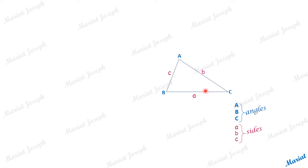So a triangle has six parts — three angles and three sides. We are going to have some formulae connecting these six quantities. Using those formulae, we will be able to find unknown parts when some parts are given. Such work is called the solution of triangles — finding the unknown parts of a triangle.